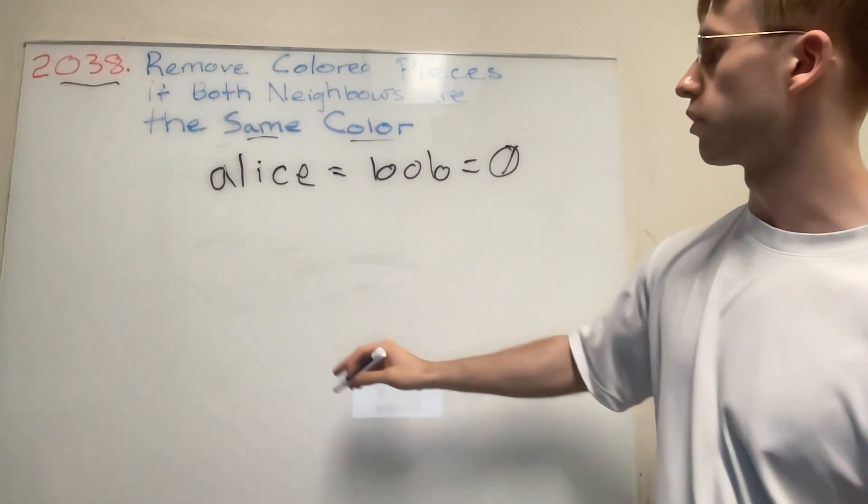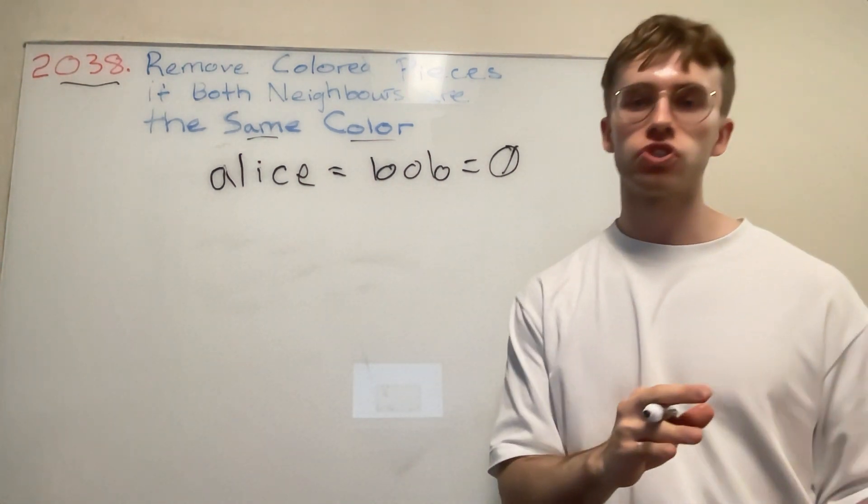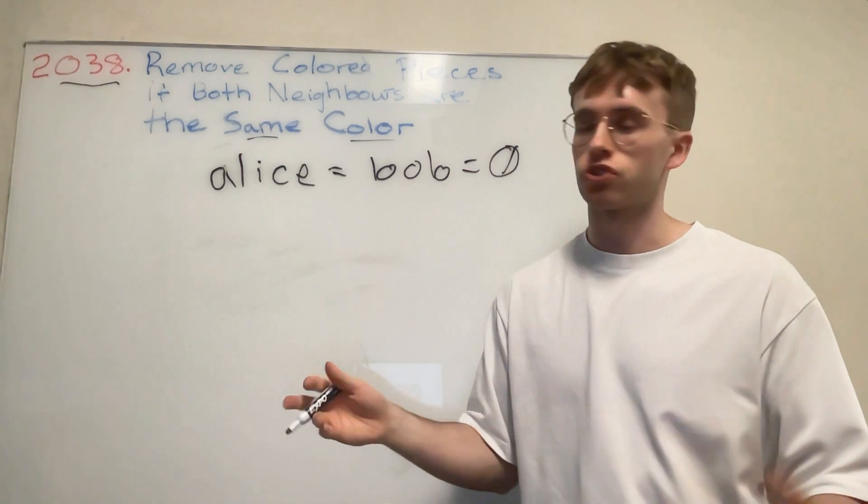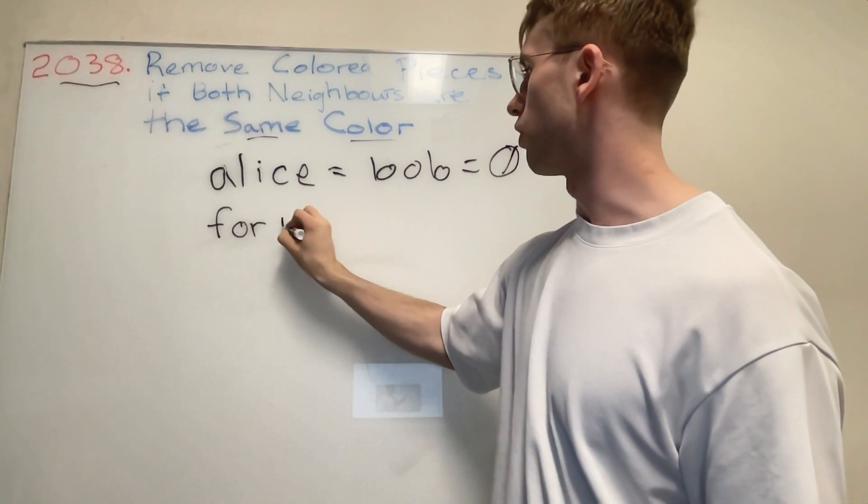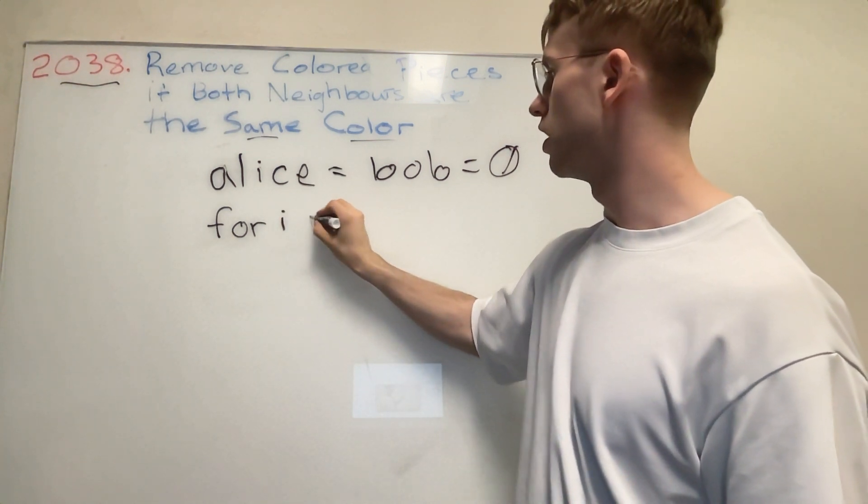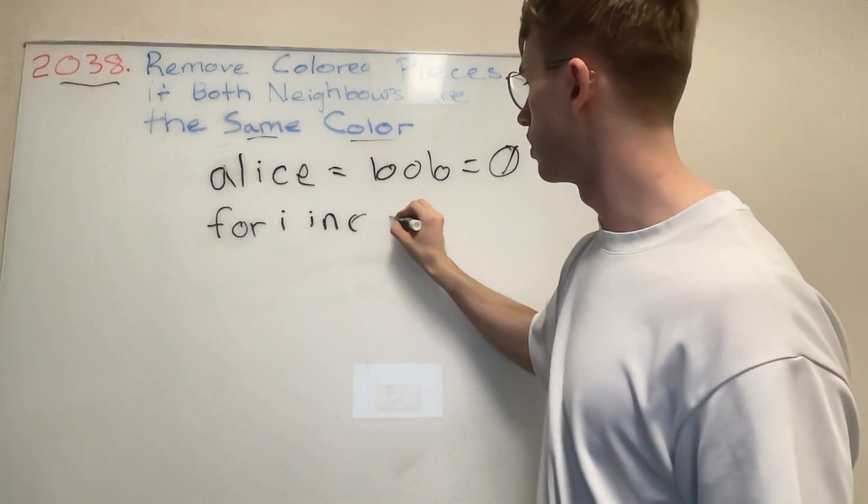From here, what we're going to say is okay, let's just iterate through this entire string. So in Python it's represented like this: for every integer in the range...